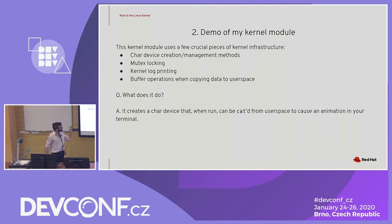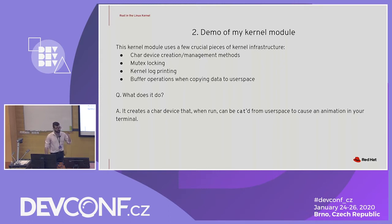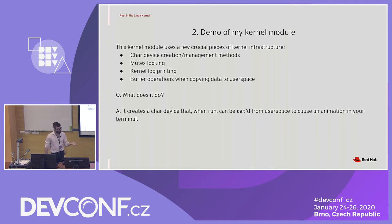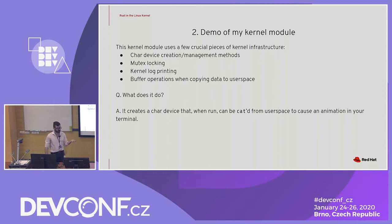Now we'll have a little demo of my kernel module. The module itself is pretty silly but does some really important things. It's going to do some char device creation using the kernel API, has some mutex locking in there, is going to print out to the kernel logs, and even does some buffer operations that are marked as safe and encode the length in the buffers — so we don't really have to worry about buffer overflows here.